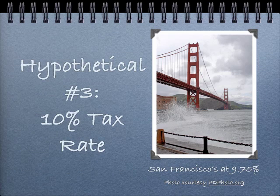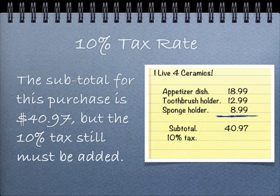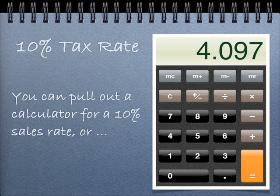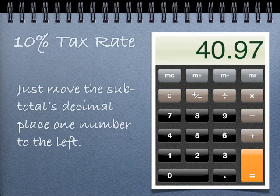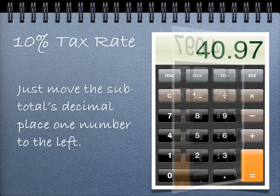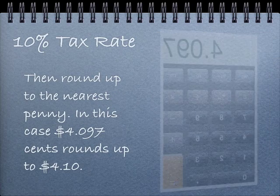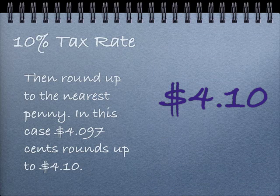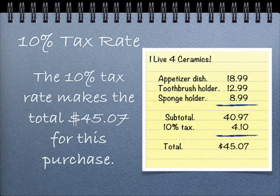Hypothetical number three: a 10% tax rate. Yes — some cities in California are 10% and over. Here we have a subtotal of $40.97, but the 10% tax still must be added. You can pull a calculator out for a 10% sales tax rate, or just move the subtotal's decimal place one number to the left, then round up to the nearest penny. In this case, $4.097 rounds up to $4.10. The 10% tax rate makes the total $45.07 for this purchase.